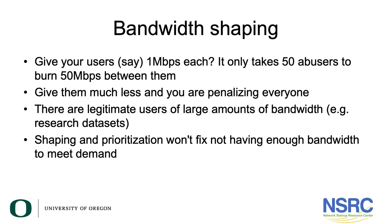Should you shape your bandwidth? This means, for instance, giving every user a maximum of one megabit on a 50 megabit connection. It only takes 50 abusers to burn through all 50 megabits, but giving everybody much less penalizes everyone, and there is legitimate use of large amounts of bandwidth. Shaping and prioritization won't fix not having enough bandwidth — getting more bandwidth is what fixes that. Meanwhile, if you're monitoring your network well using NetFlow, you can look for your top talkers — the people using the most bandwidth — figure out what they're doing, and if it looks illegitimate, you can talk to them or block them.